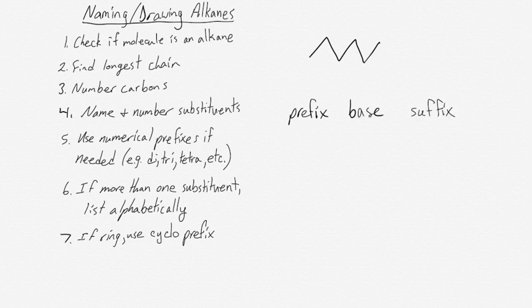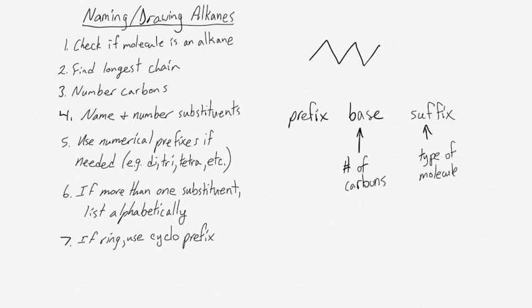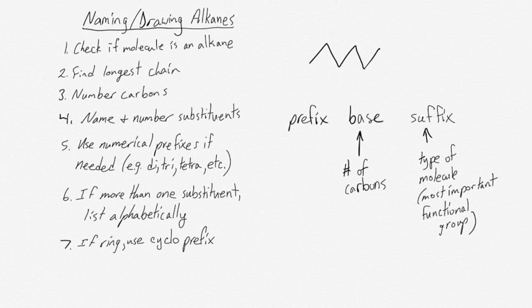The molecular names will be based around this kind of structure, with a prefix, a base, and a suffix. The base represents the longest carbon chain in the molecule. The suffix represents the type of molecule, so this can be either alkane, alkene, or whatever the most important functional group is. The prefix is going to represent what kind of substituents are present, so this is what kind of groups are sticking off of that main chain.